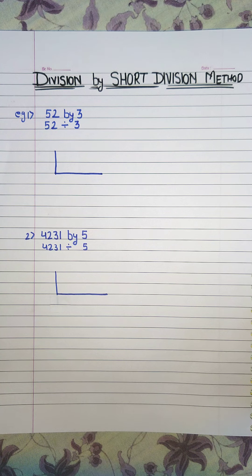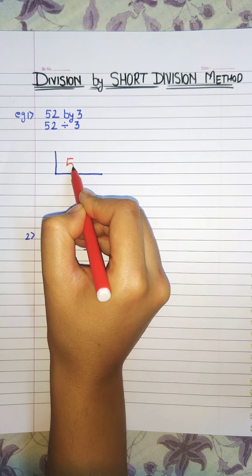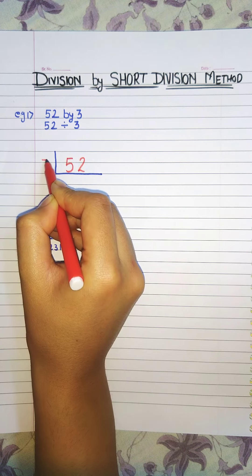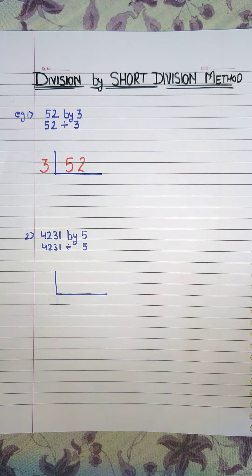So example one is divide 52 by 3. For short division, write the dividend and divisor like this. Here dividend and here divisor and we will put two lines like this.